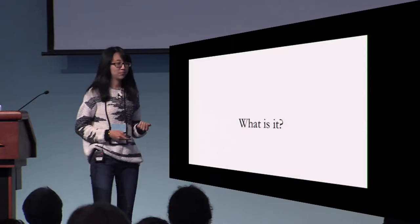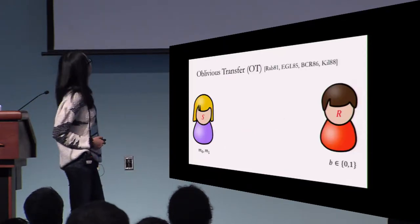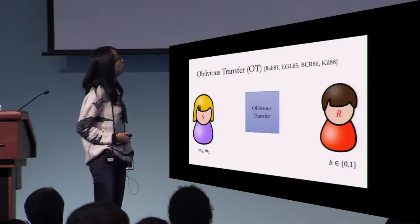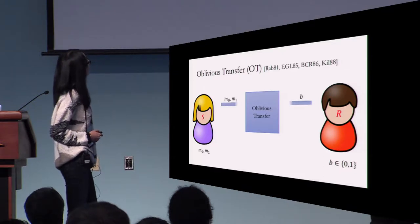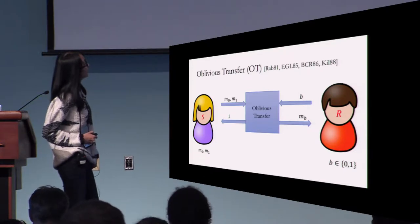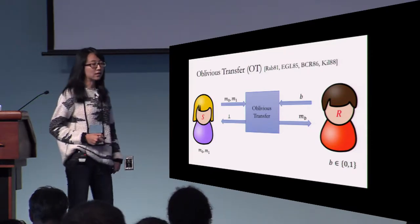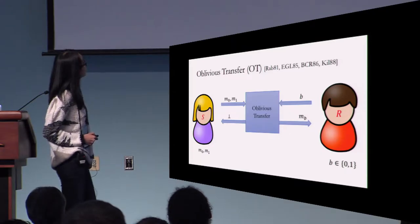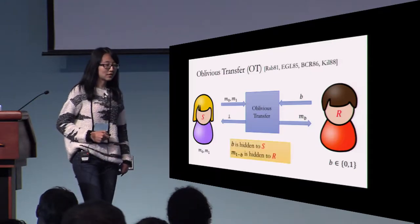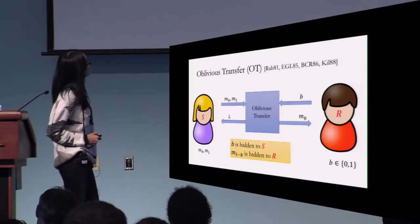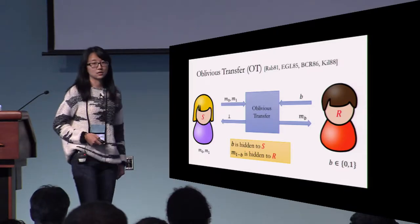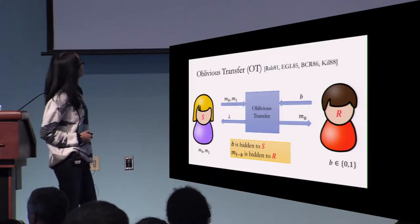What is it? Let's start from the definition of oblivious transfer, which is a special secure two-party computation protocol where we have a sender and receiver. The sender has two messages M0, M1 as input, and the receiver has a single bit B as input. At the end of the protocol, the receiver gets one of the two messages depending on his choice bit, and the sender gets nothing. The security guarantee is that bit B is hidden to the sender, and the other message M_{1-B} is hidden to the receiver.